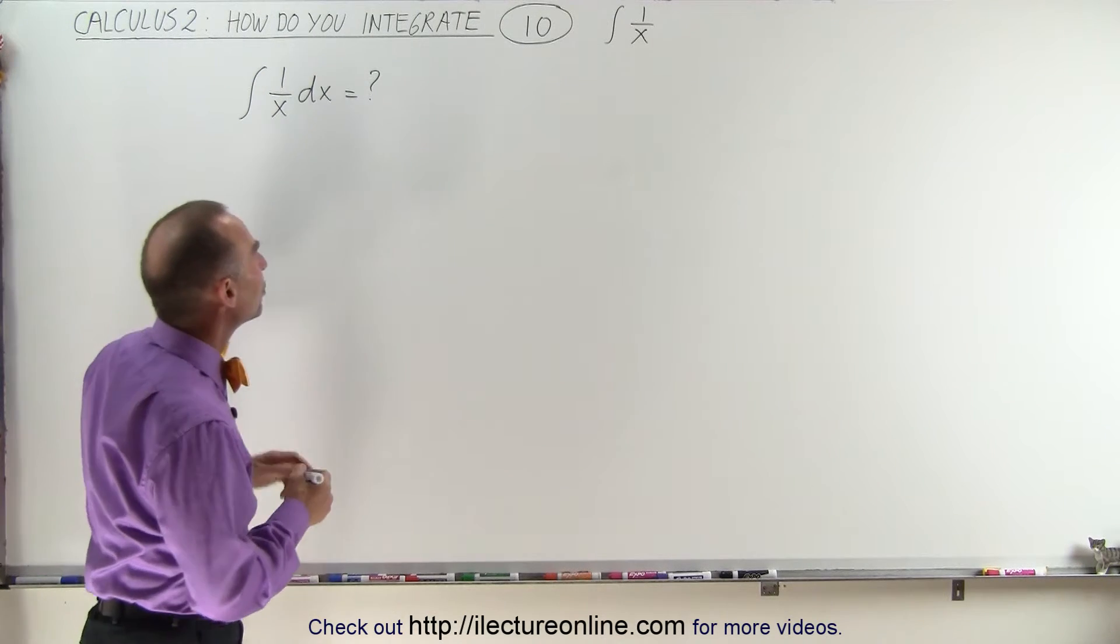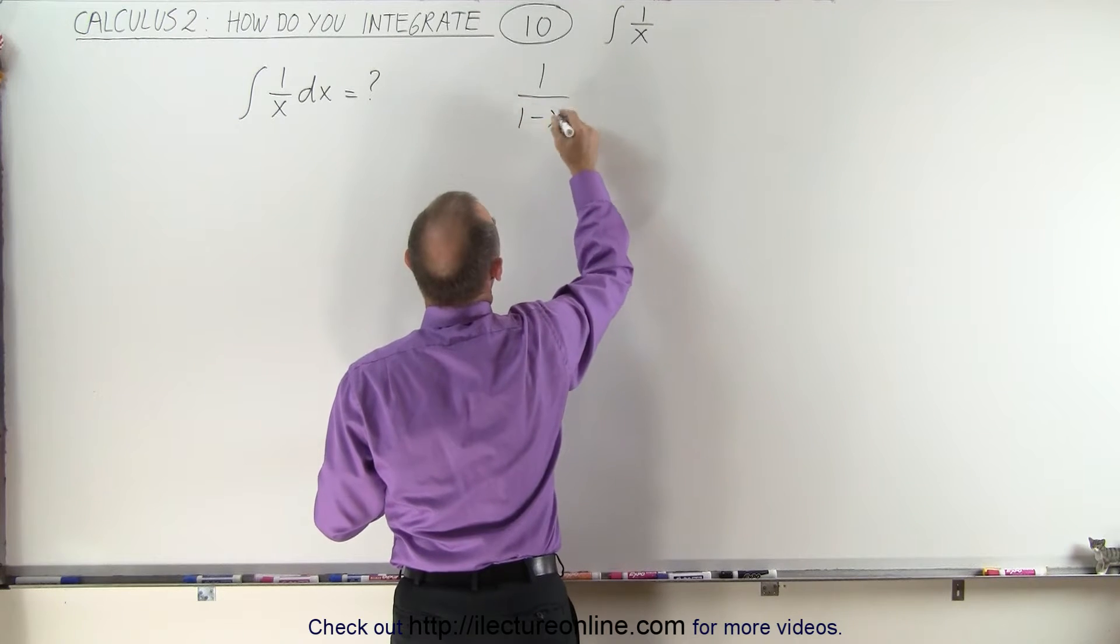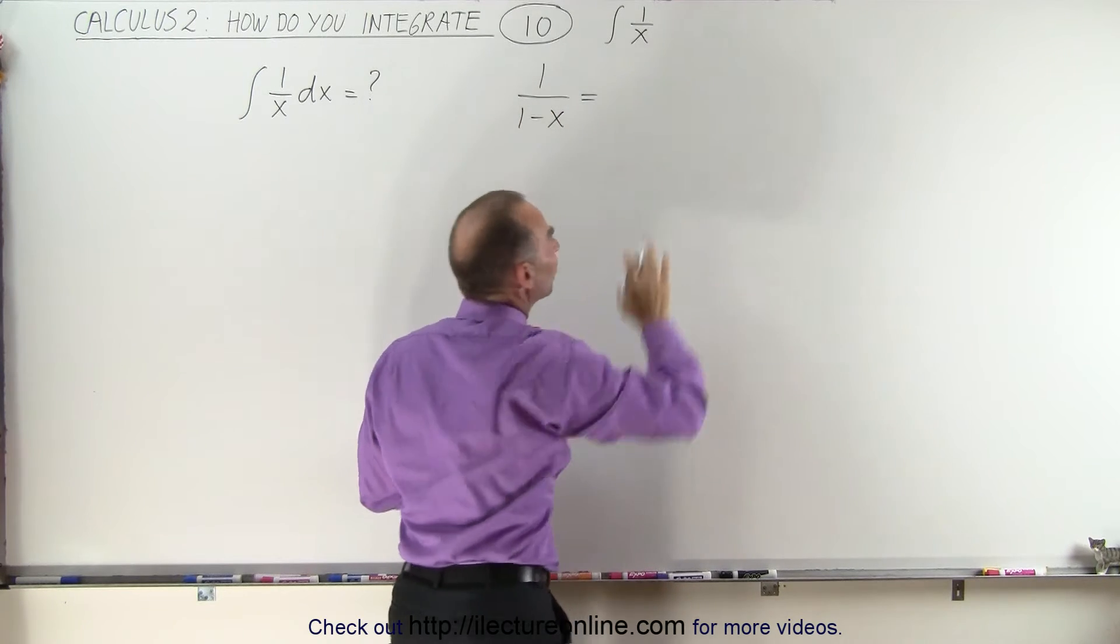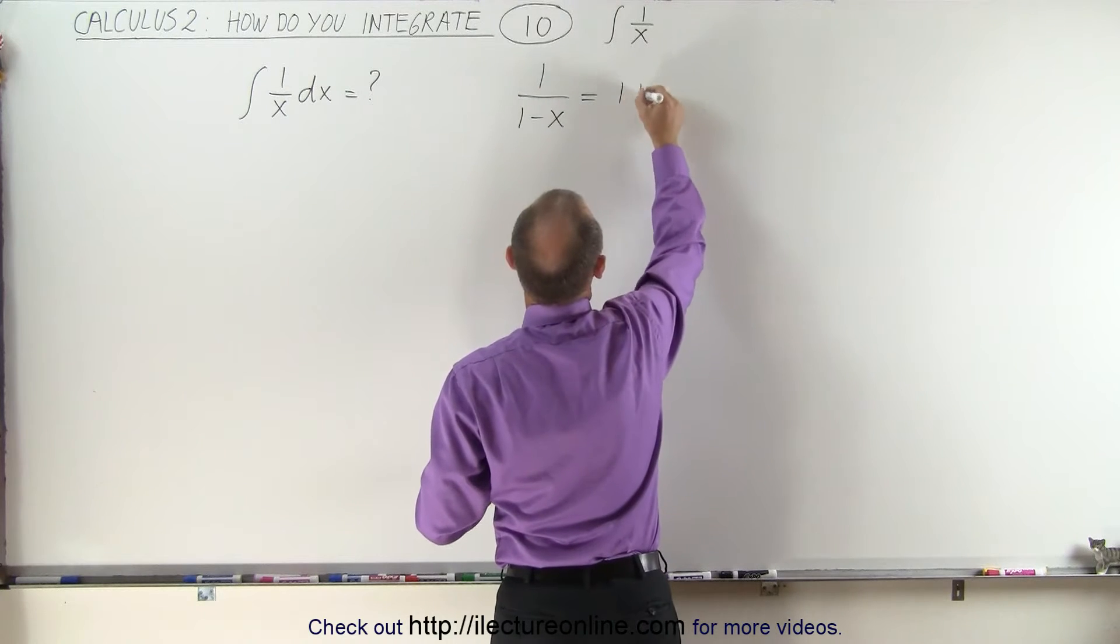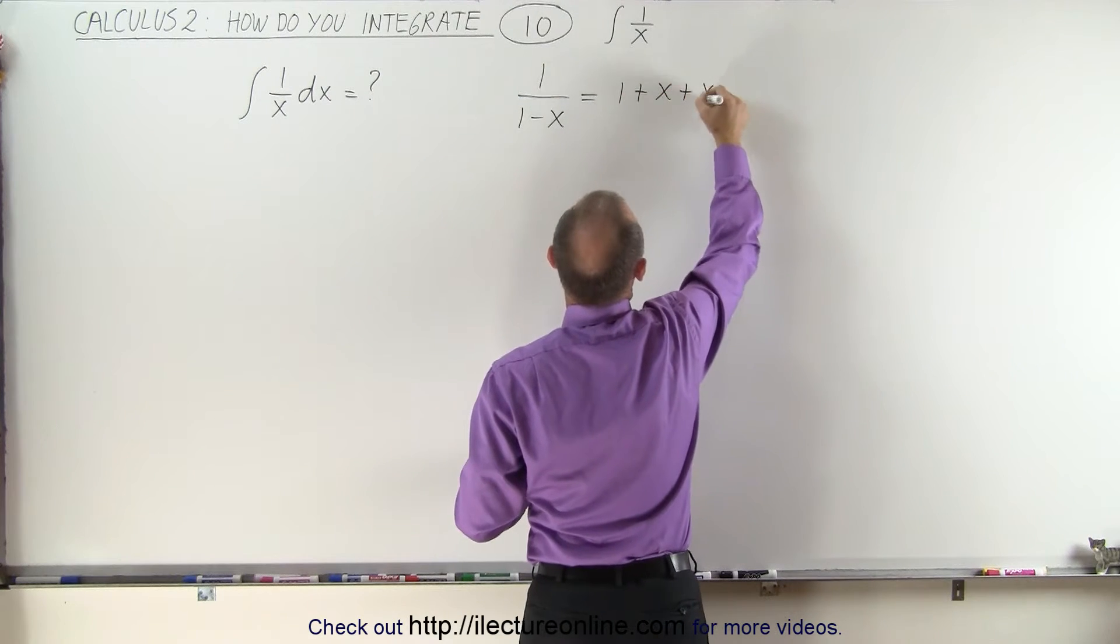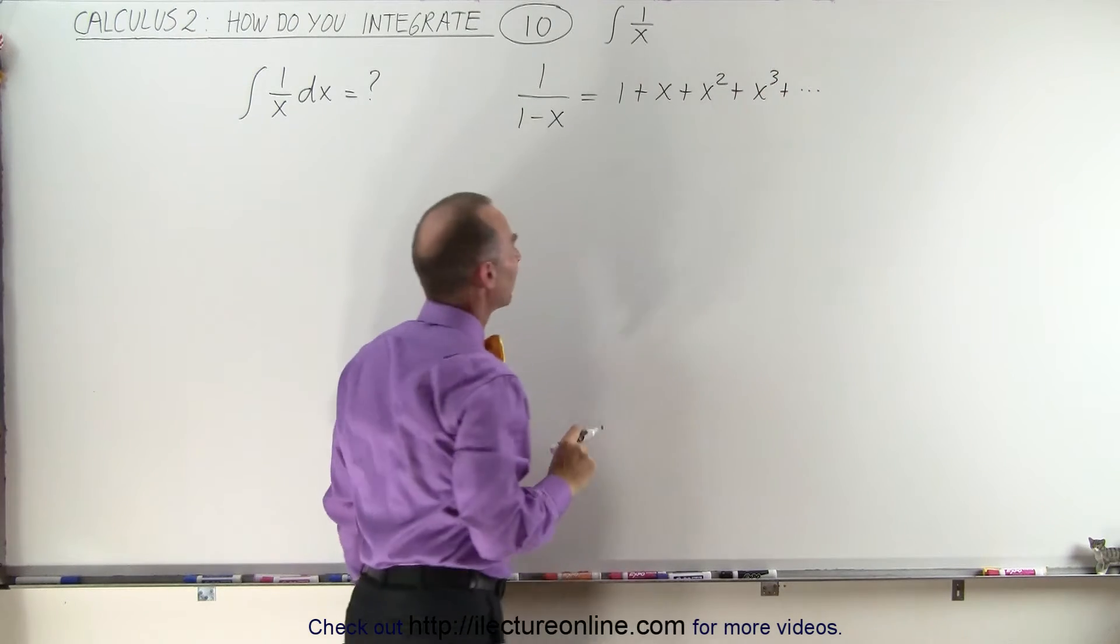First of all, what we can do is we can take 1 over 1 minus x and write it out as an infinite sum. That's called the power series. And this can be written as 1 plus x plus x squared plus x cubed and so forth.